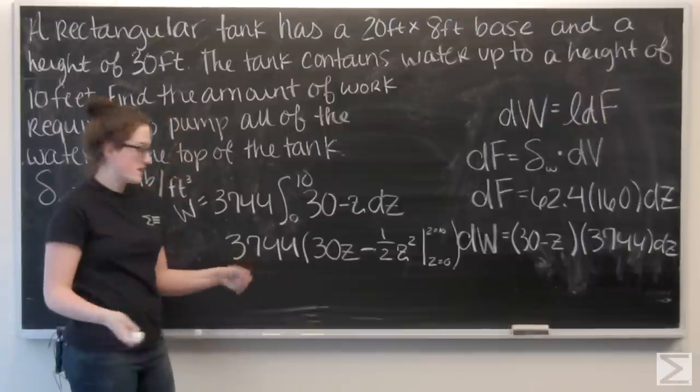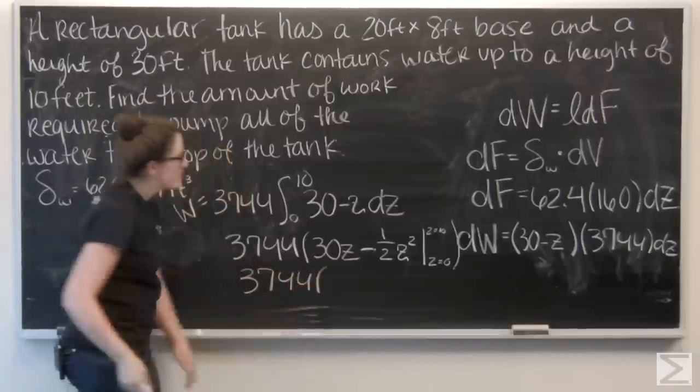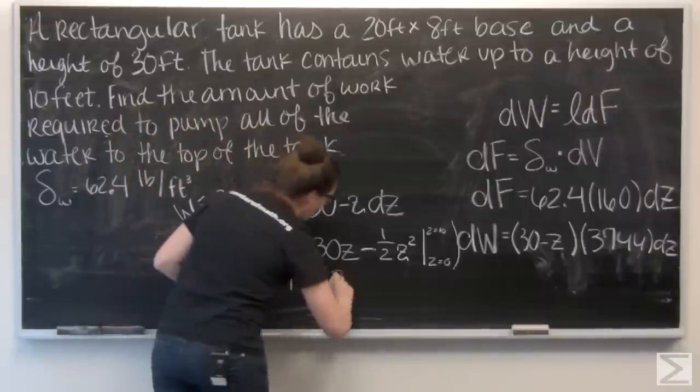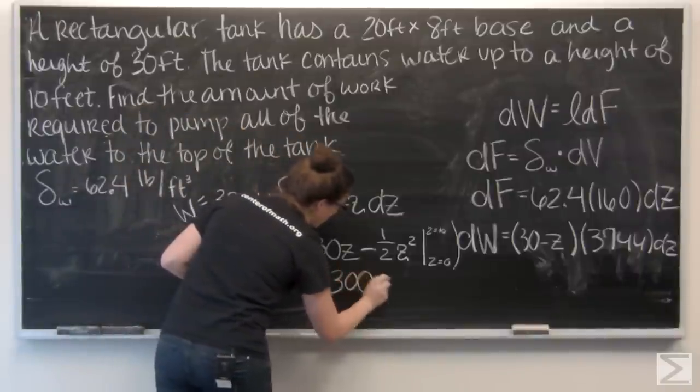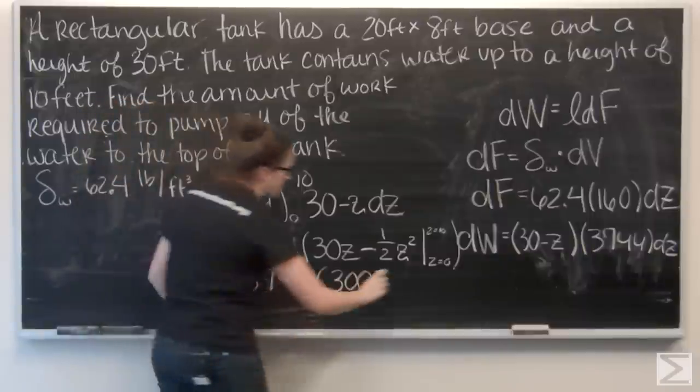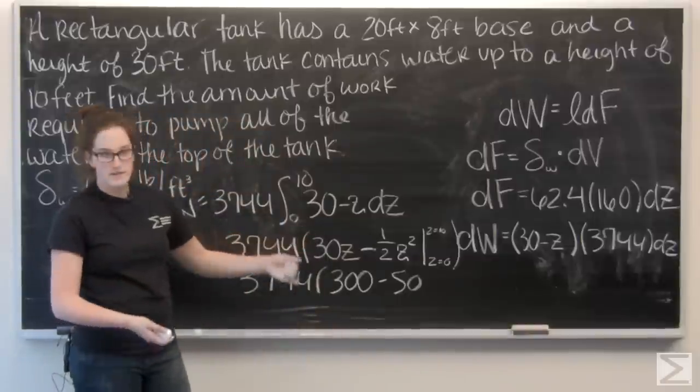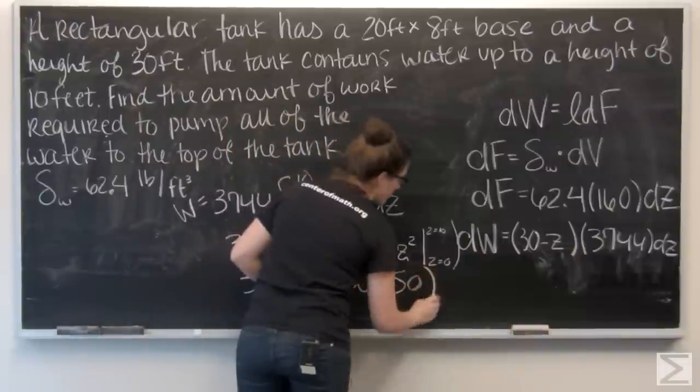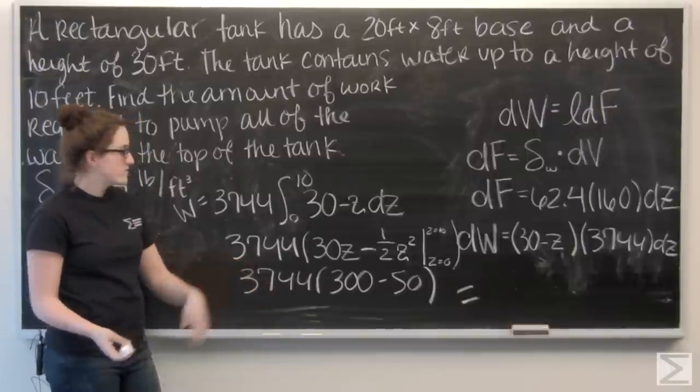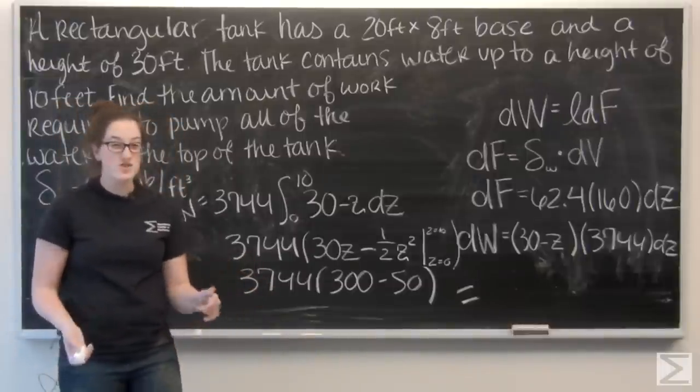And I want to evaluate this from z equals 0 to z equals 10. So, let's start by plugging in. Well, let's do 10 first. 30 times 10 is 300. Minus. And 10 squared is 100. Divided by 2 is 50. And then, for z equals 0, I just get 0. So, if I go ahead and plug in 3,744 times 250 in my calculator, I get 936,000.